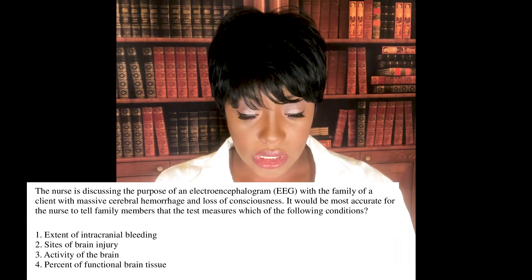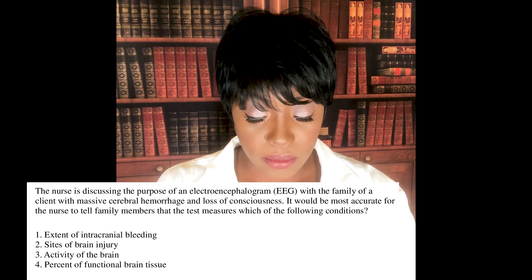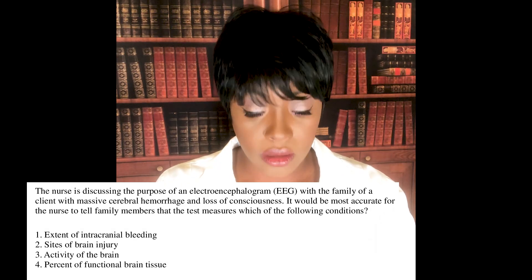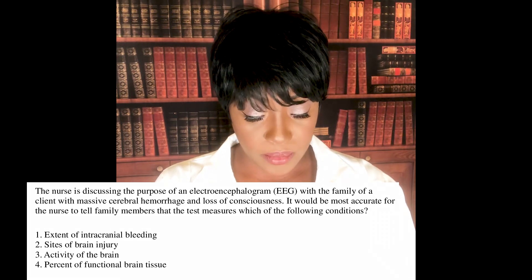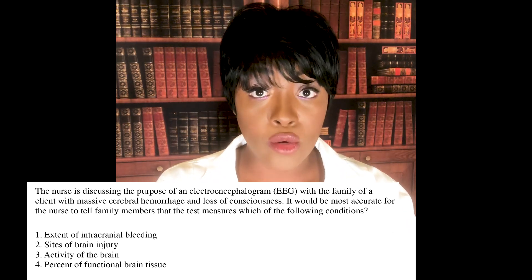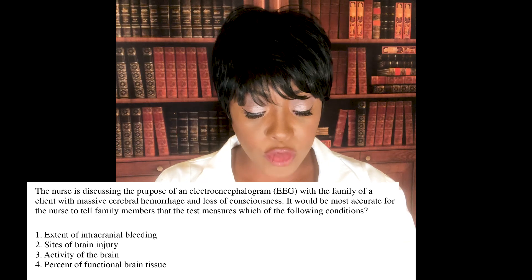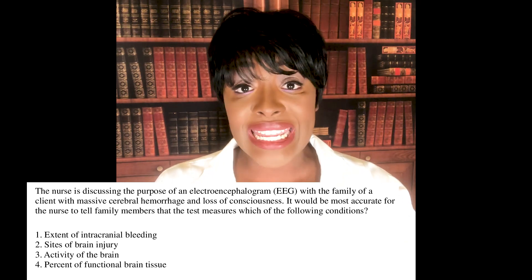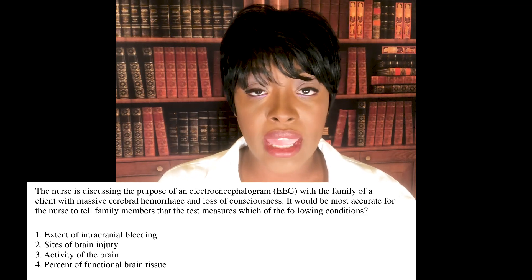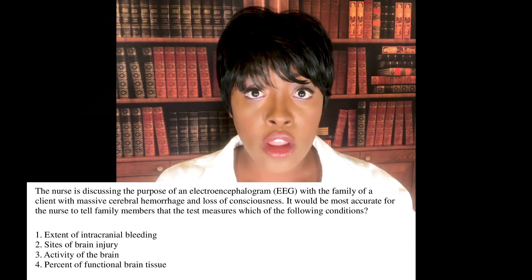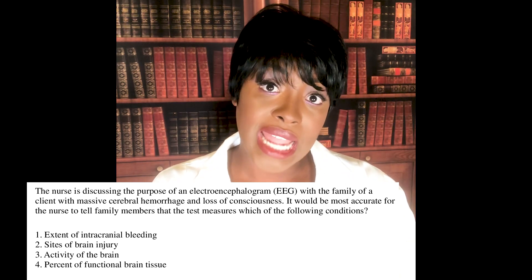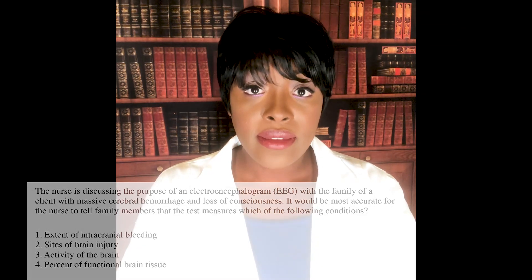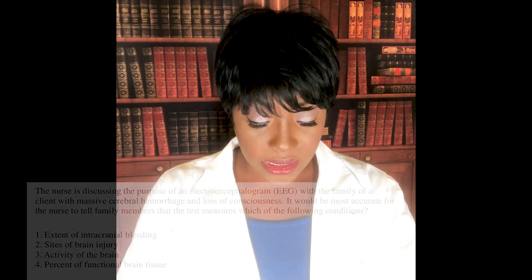Let's look at the other choices. One — extent of intracranial bleeding: that's a CT scan or MRI. Two — sites of brain injury: again, a CT scan or MRI can tell us that. Four — percent of functional brain tissue: an EEG can contribute to that assessment, but not alone — it would need to be in conjunction with a CT scan or MRI. So the definitive answer for measuring brain activity is the EEG, choice number three.